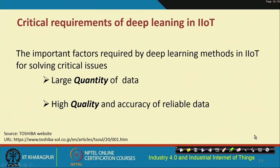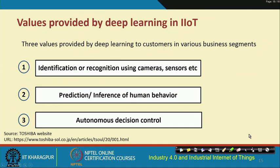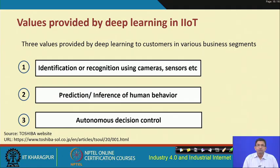The critical requirements of deep learning in IIoT are dealing with large quantities of data and meeting higher accuracy and quality requirements. Deep learning provides value by enabling customer identification or recognition using cameras and sensors, prediction or inference of human behavior, and autonomous decision control. These are the different benefits that deep learning gives to customers across different business segments.